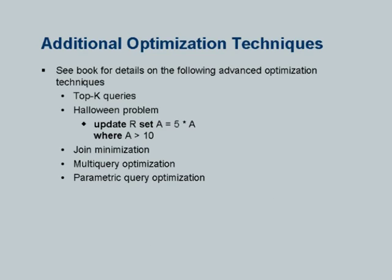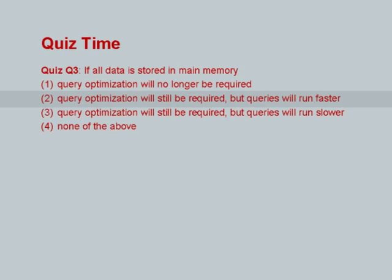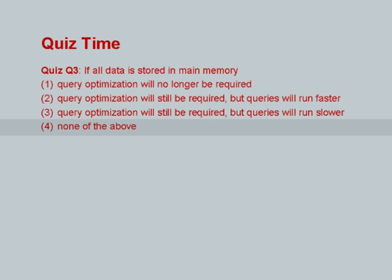There are a few more advanced optimization techniques in the book which I will skip. There is also a quiz: if all data is stored in main memory, is query optimization no longer needed? No, that is wrong. You can still have certain join orders which generate a lot of intermediate results and others which do not. Query optimization will still be required, but queries will run faster — yes, that is true, because we are reducing the cost of disk access and IO. Option 3 saying queries will run slower is silly, and none of the above is also wrong. So option 2 is correct.